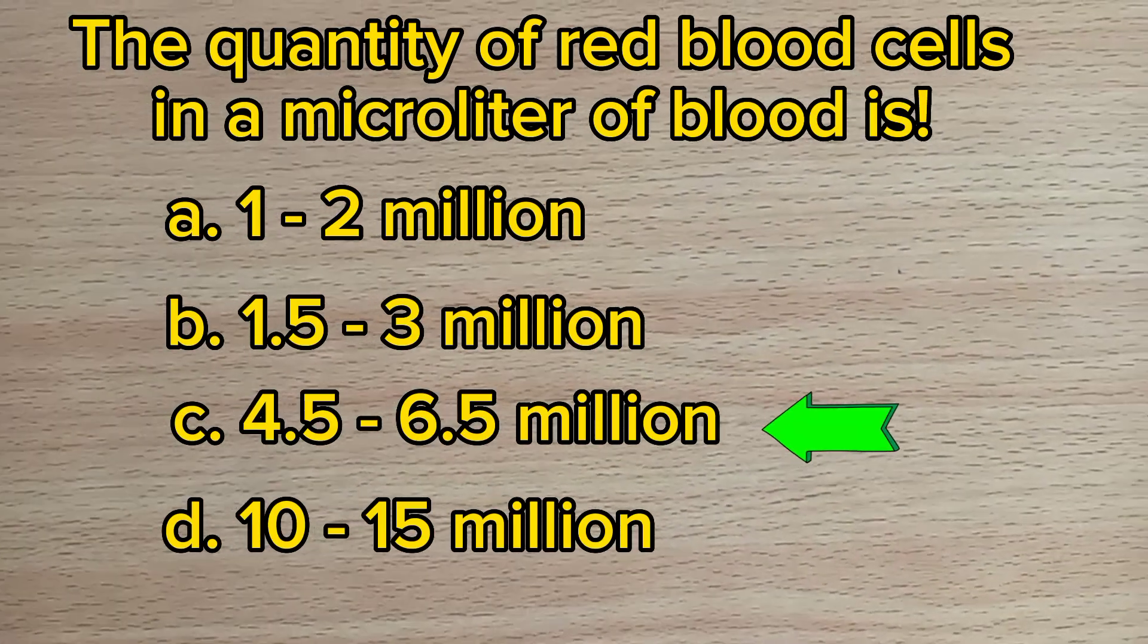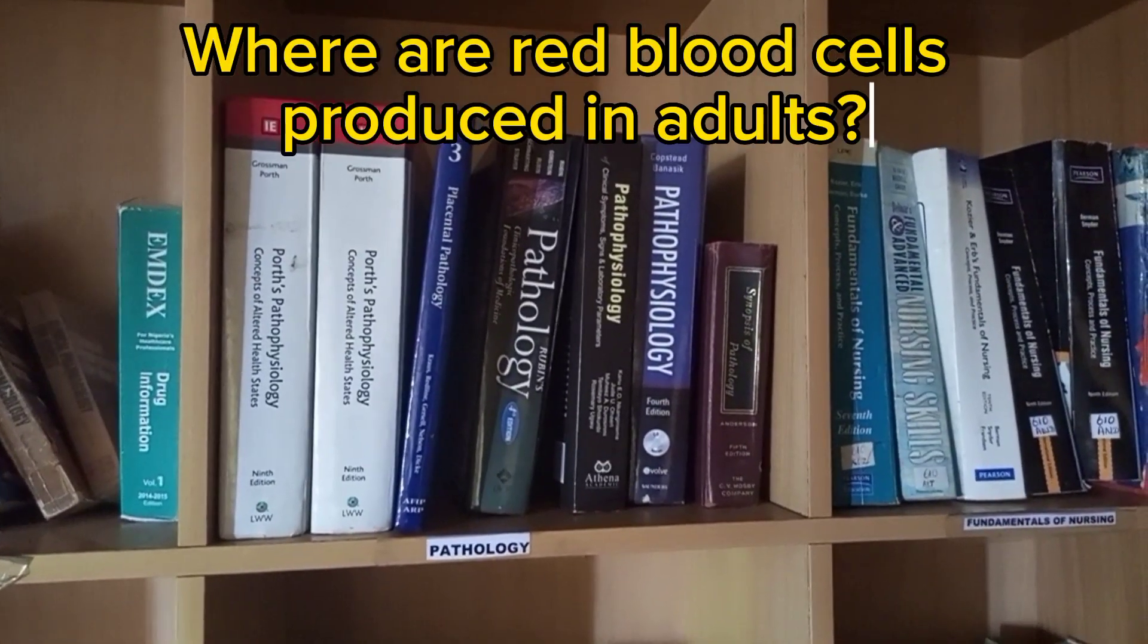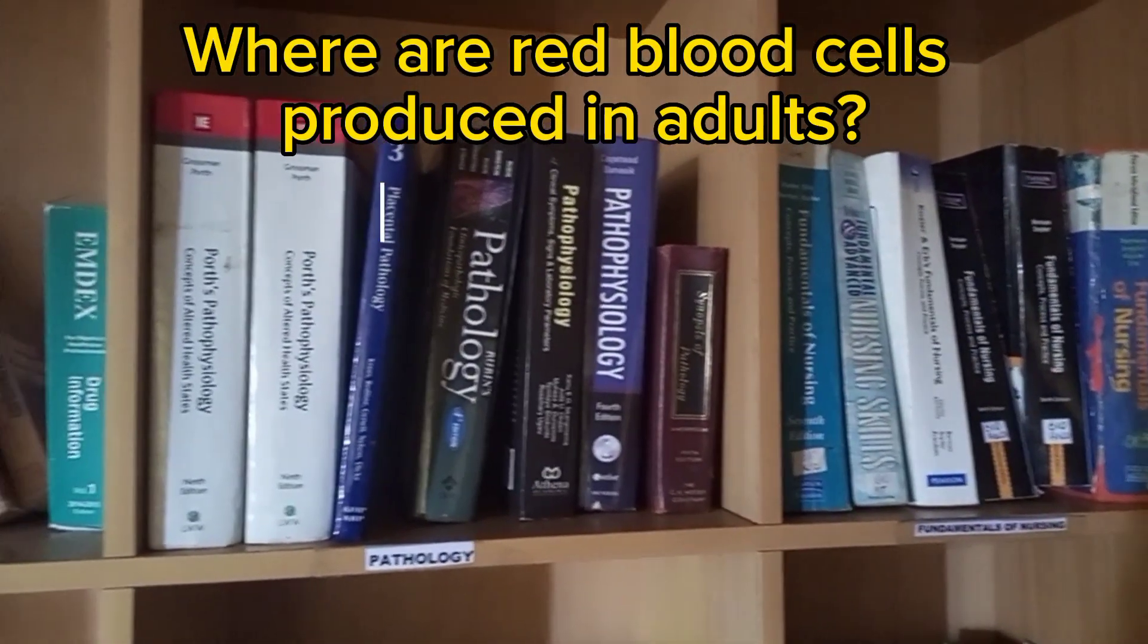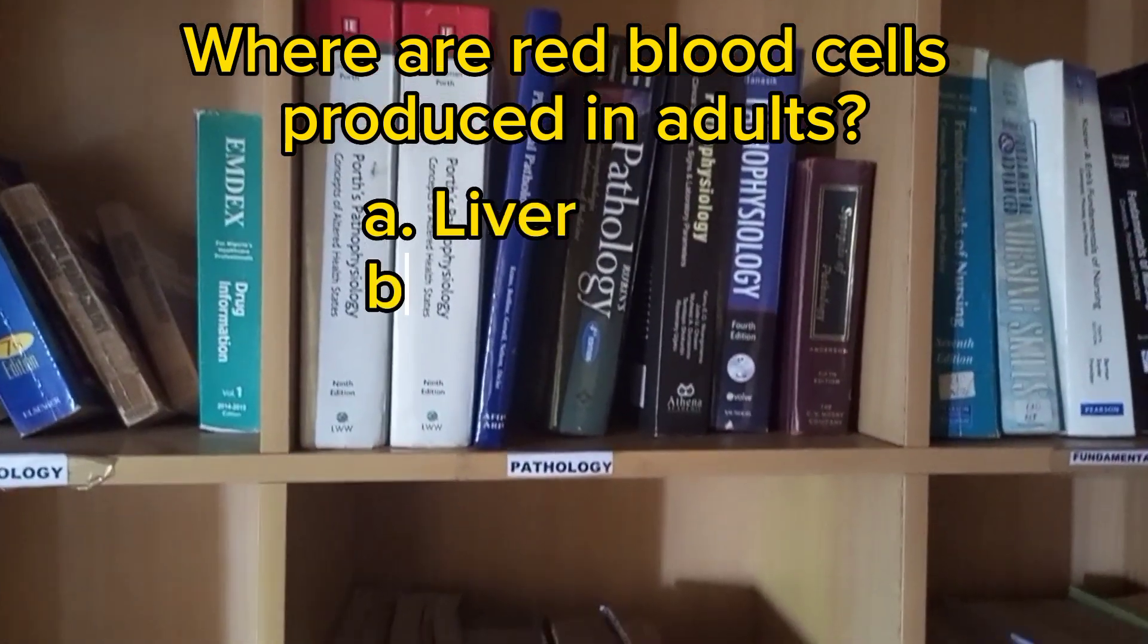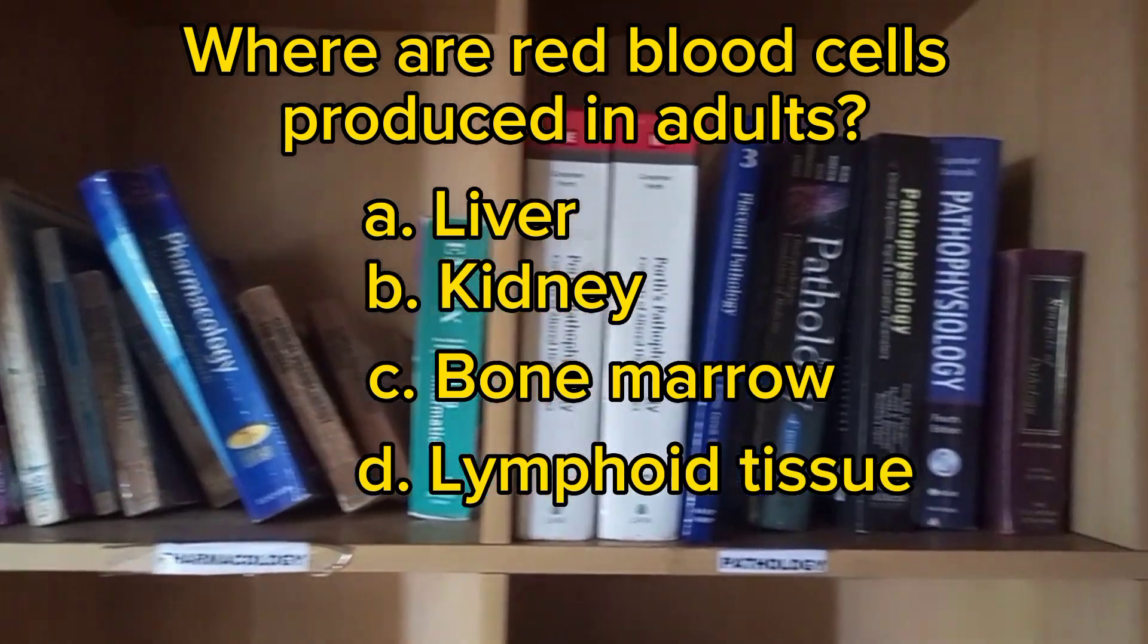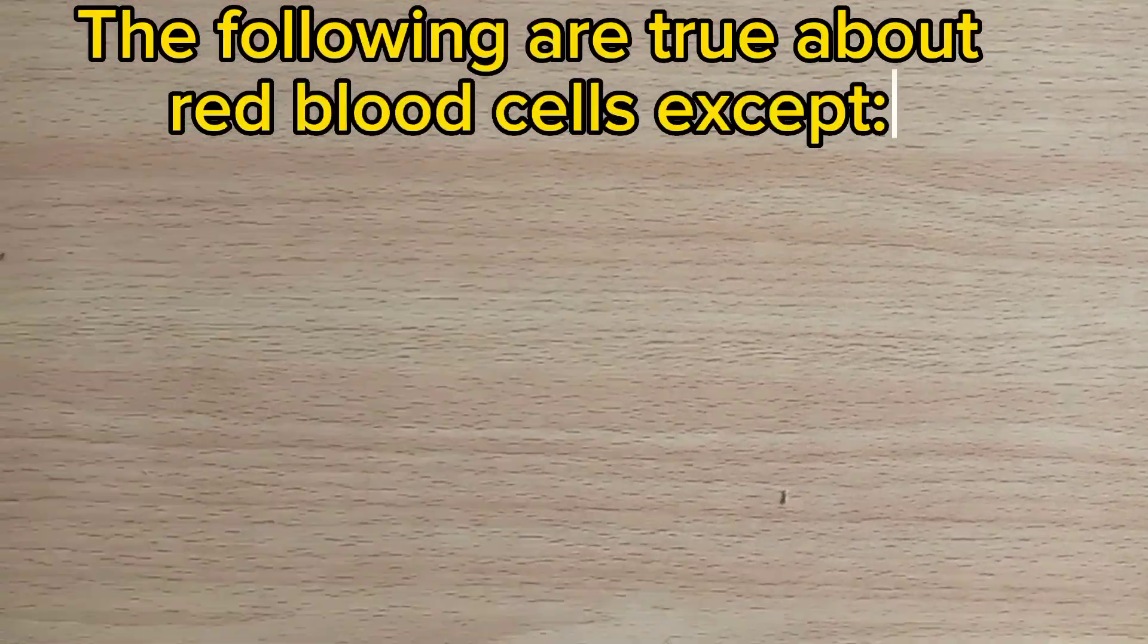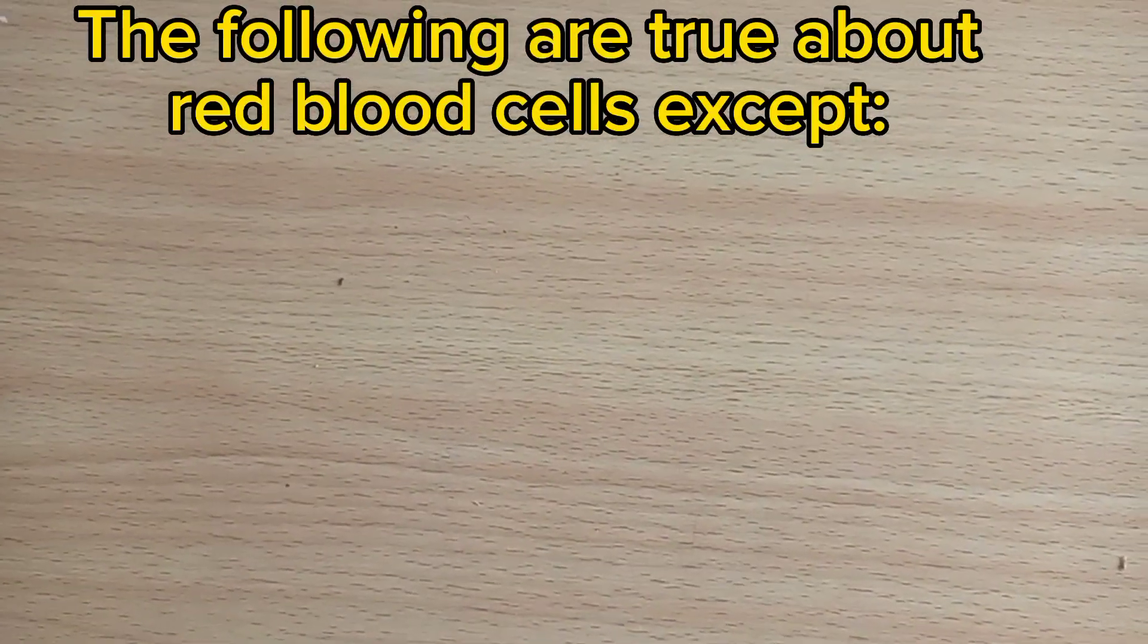Number twelve: Where are red blood cells produced in adults? A. Liver, B. Kidney, C. Bone marrow, D. Lymphoid tissue. The answer is C, bone marrow. Number thirteen: The following are true about red blood cells except: